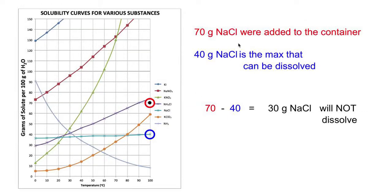So the question says, if 70 grams of NaCl were added to a container, how much would not dissolve? So find this point on a curve.